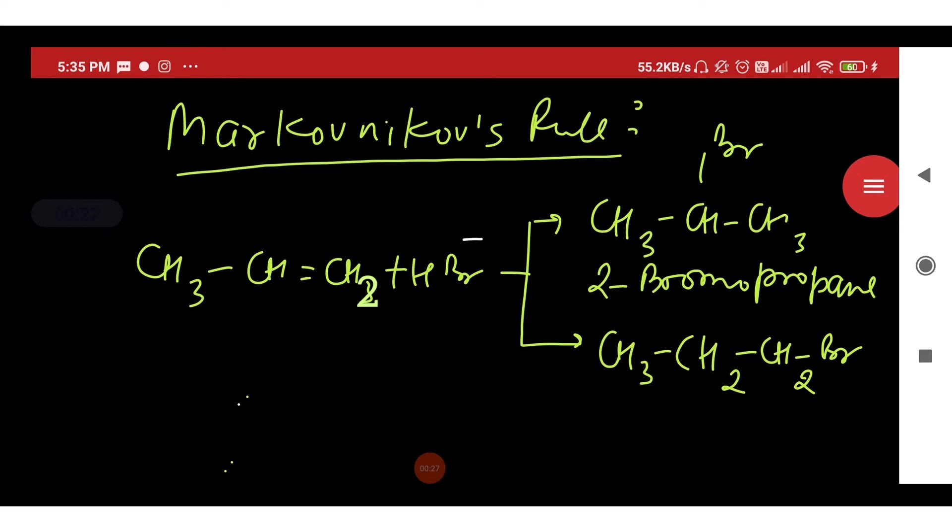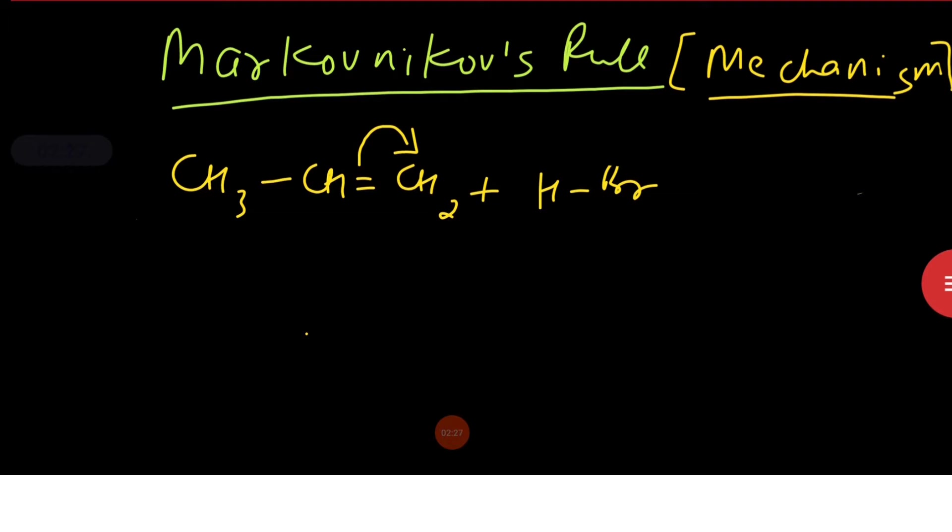the negative part of the addendum gets attached to that carbon atom which possesses lesser number of hydrogen atoms. Now mechanism: